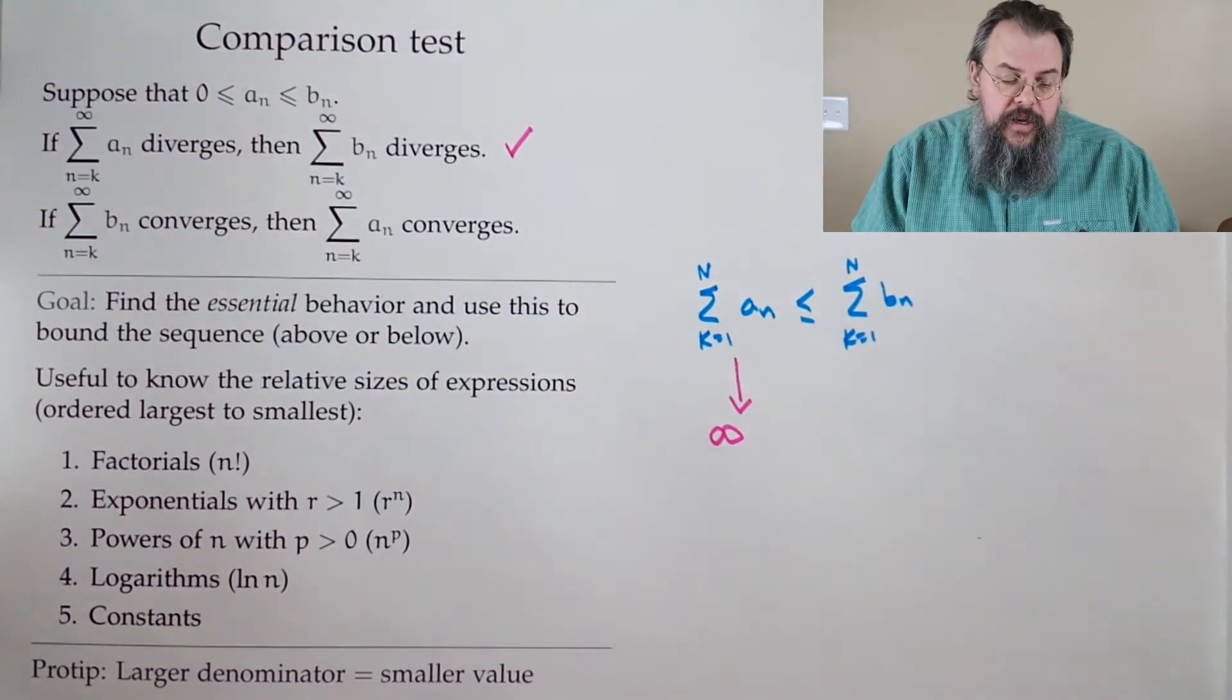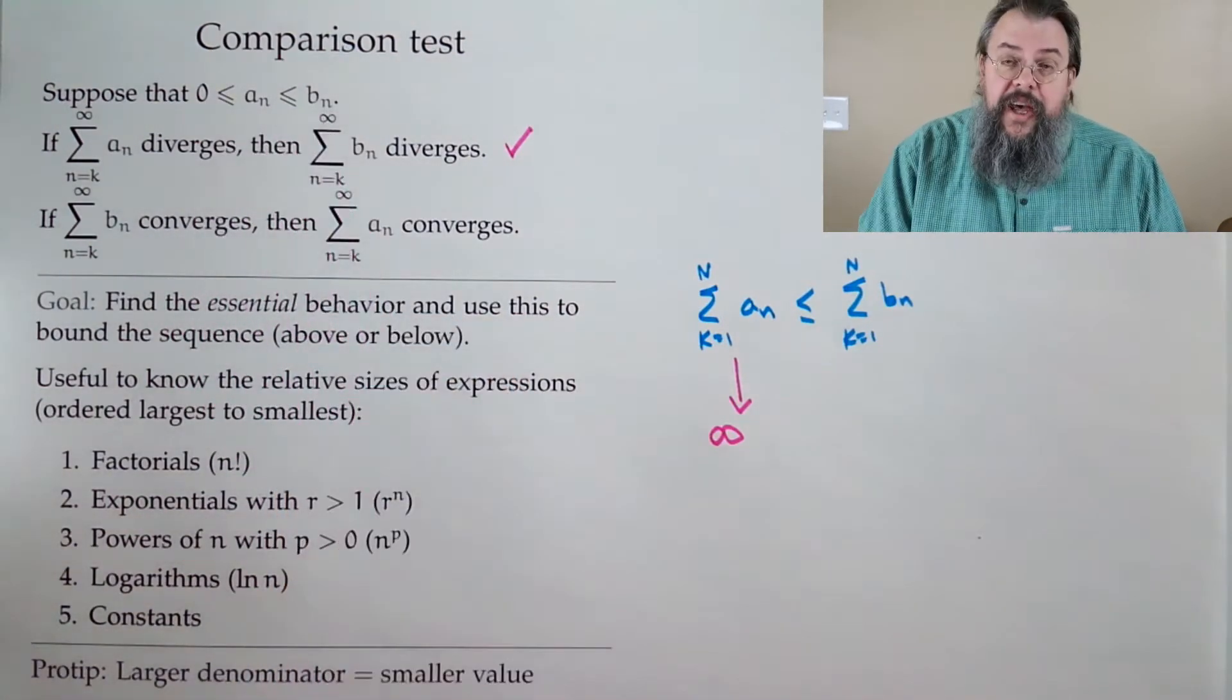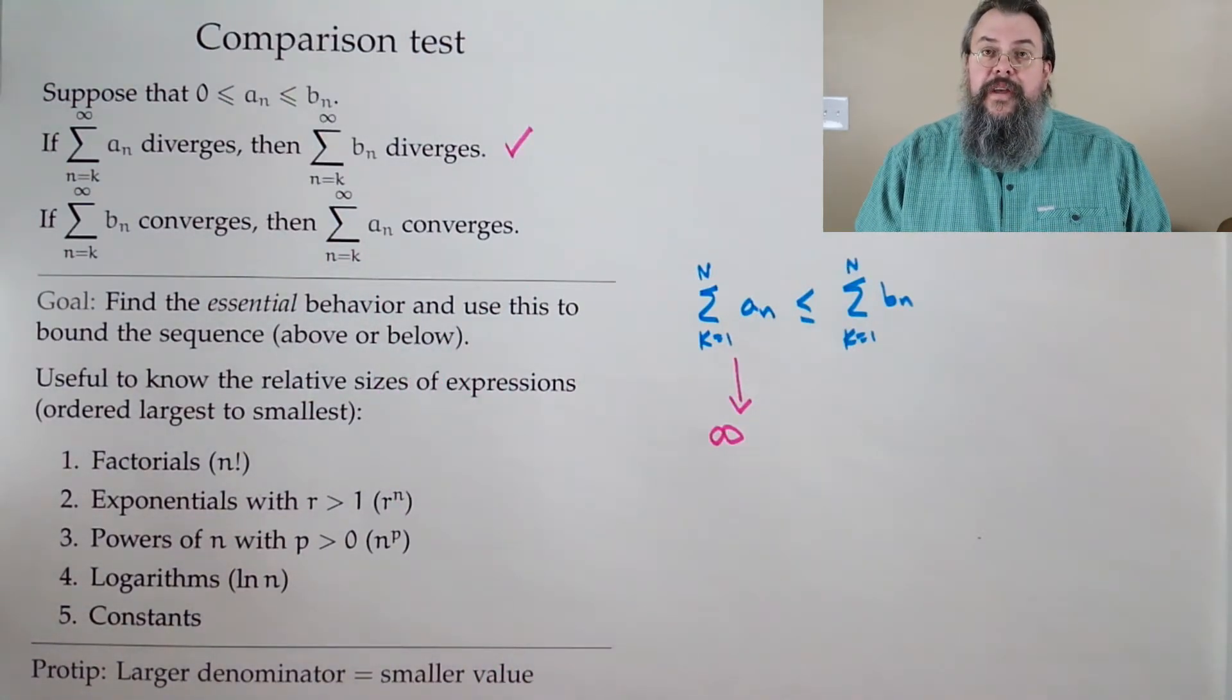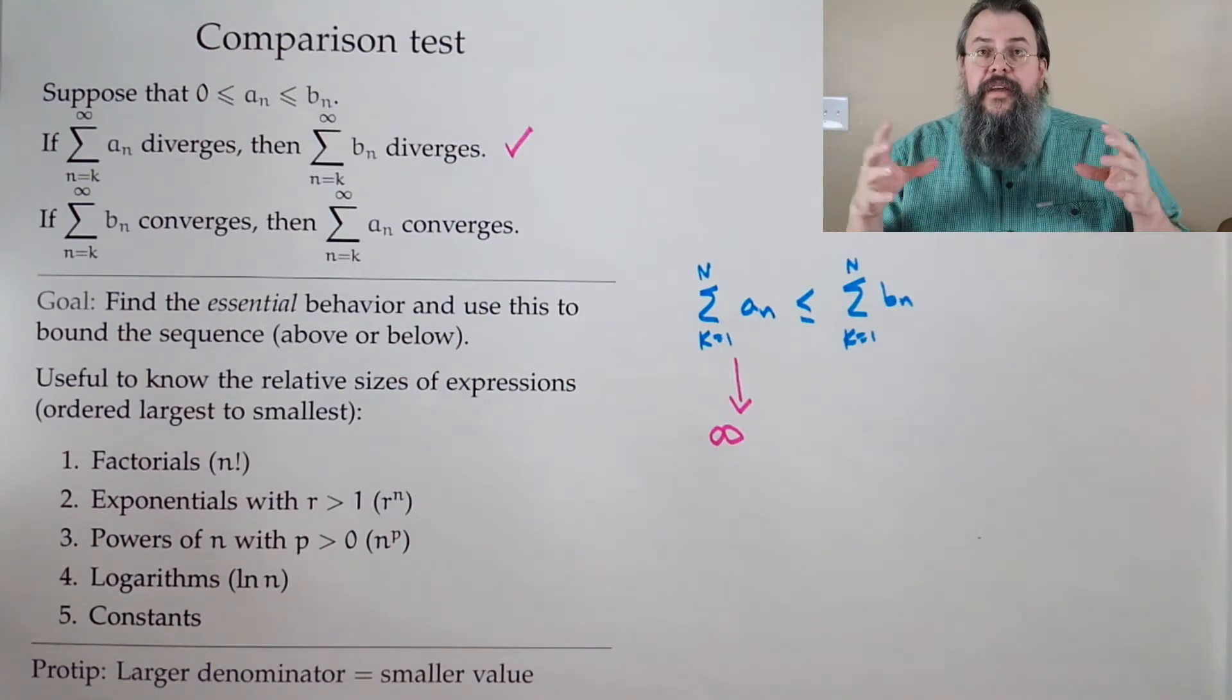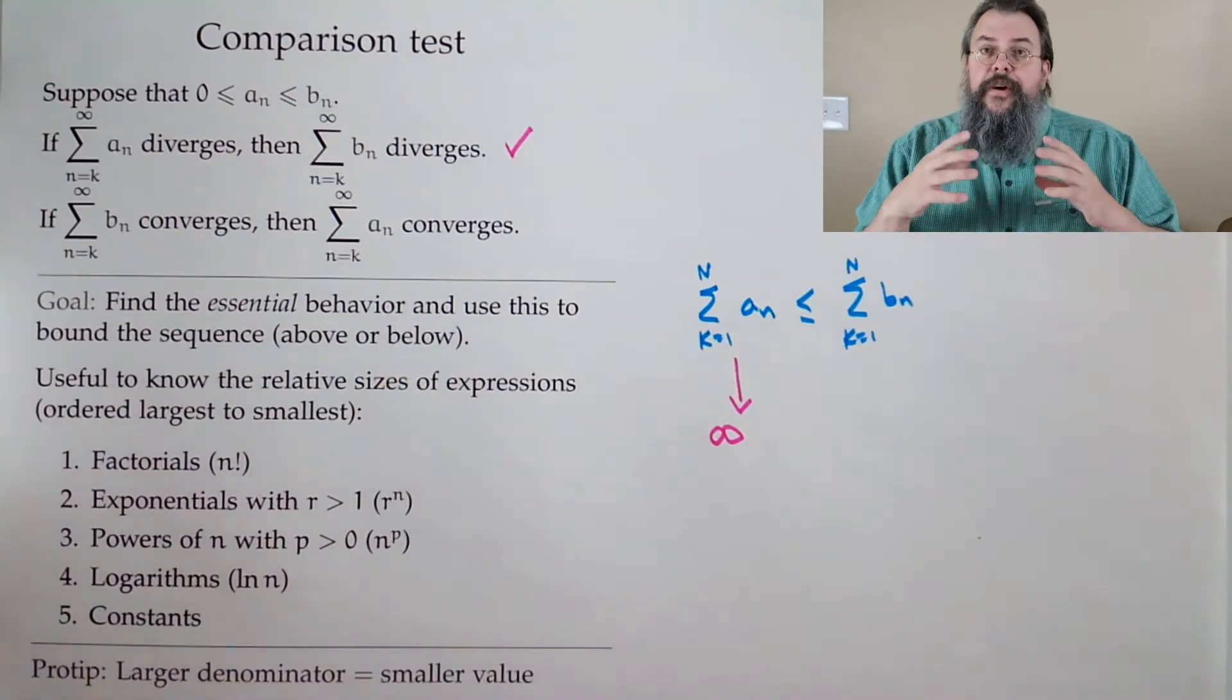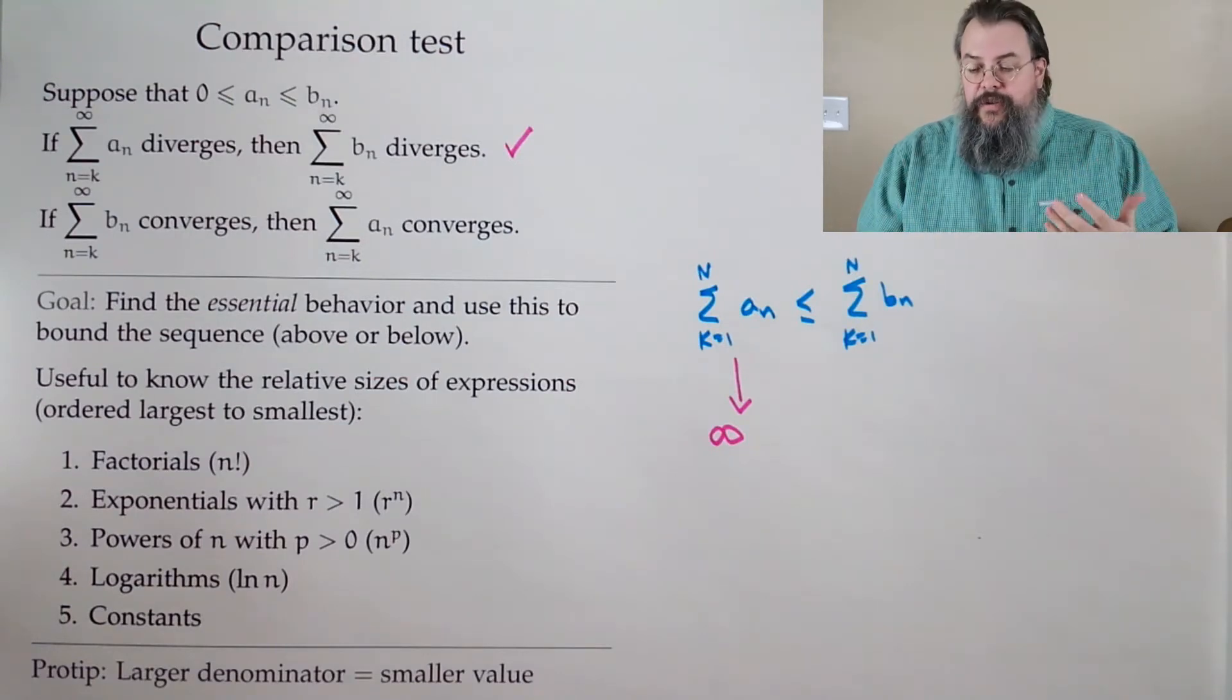But now, what if your sum b sub n, what if that converges? The claim is the sum of a sub n converges. Now, intuitively, we're just saying, if we add up the b sub n, it's finite, and the sum of the a sub n has to be less than or equal to that. So it also has to be finite. So that's a great intuition.